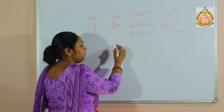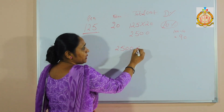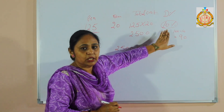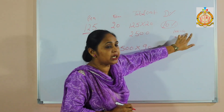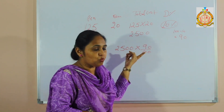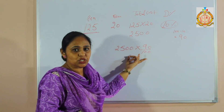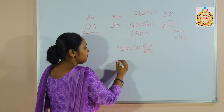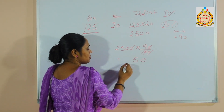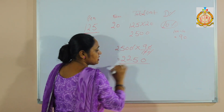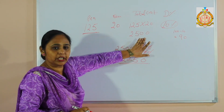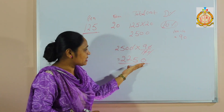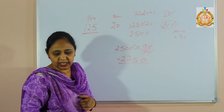So my total payment of 2500 is multiplied by 90%. That means I do not separately subtract the discount — I directly take 90% of 2500, which gives 2250. So after the discount, the amount I have to pay is 2250 rupees. Now I have to apply the GST on this value.